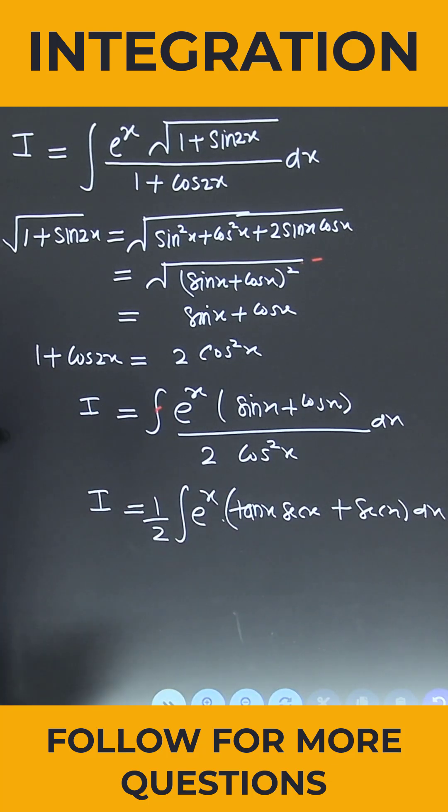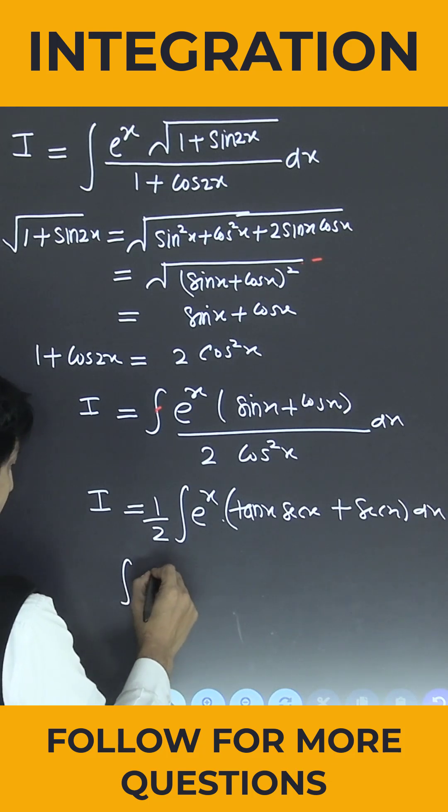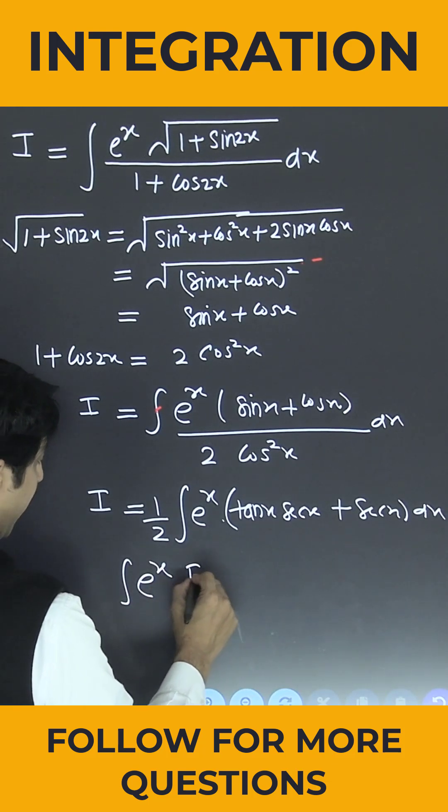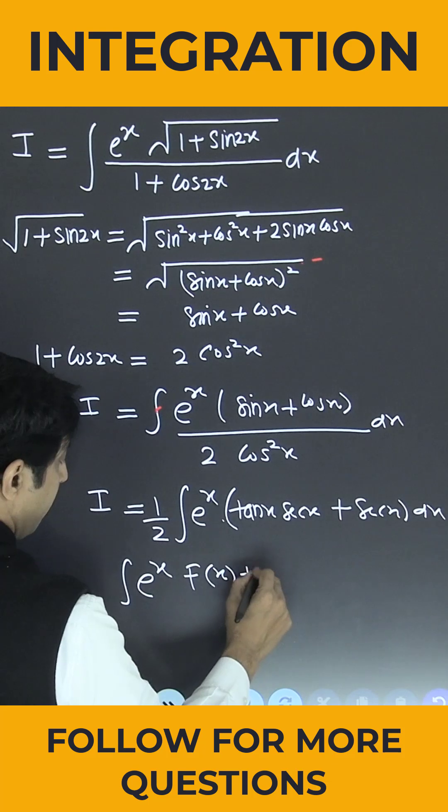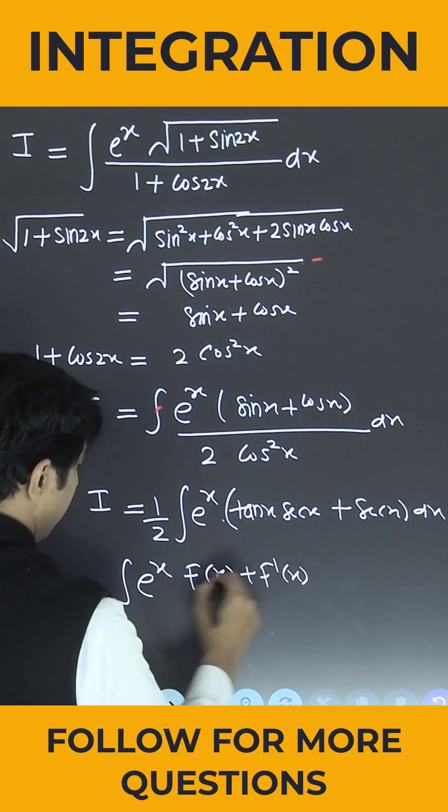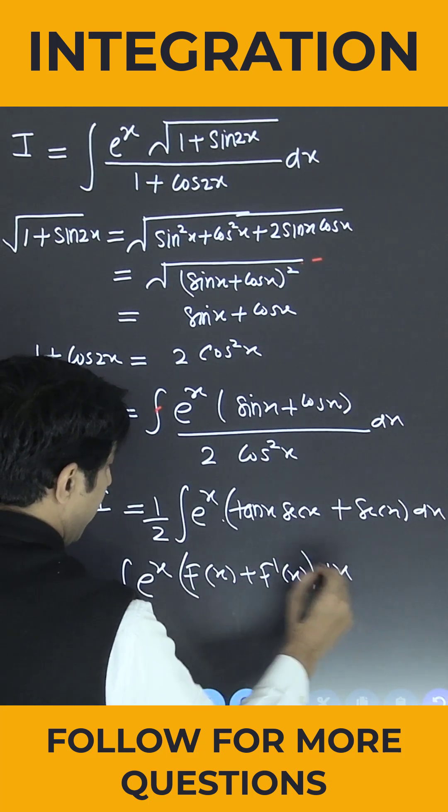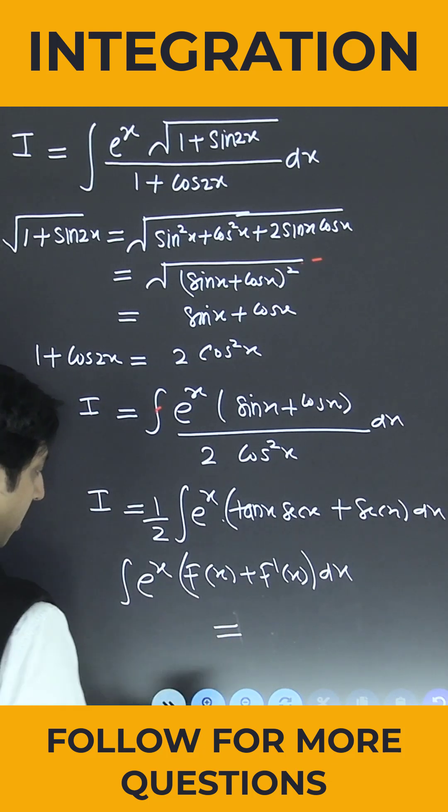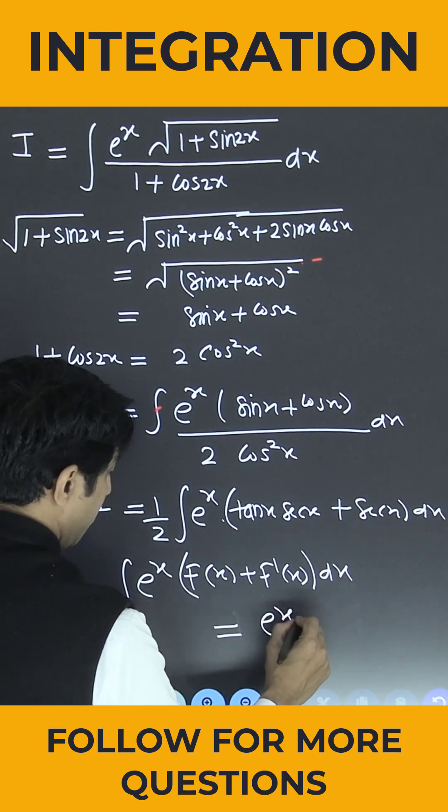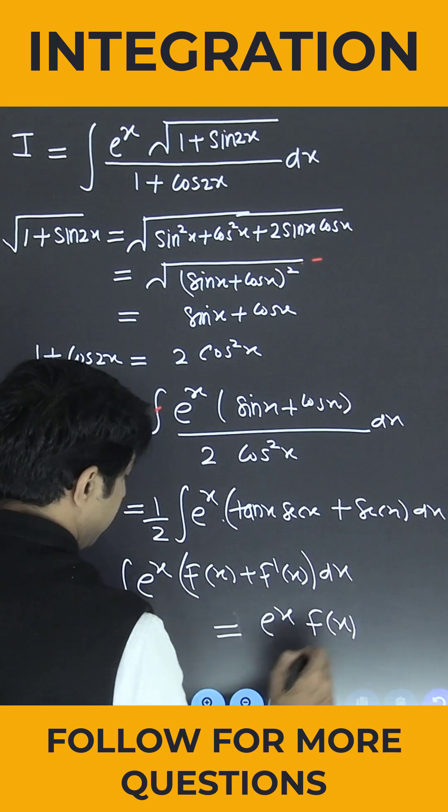Now we can compare this with the standard formula. What is the standard formula? e^x times [f(x) + f'(x)] dx. So what is the result? The result is nothing but e^x times f(x).